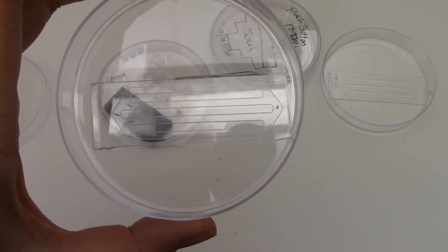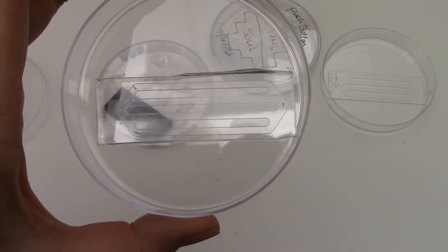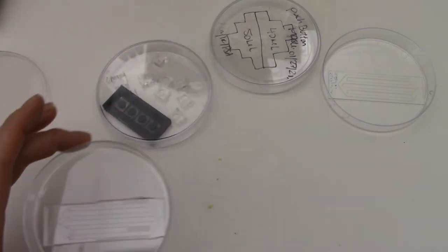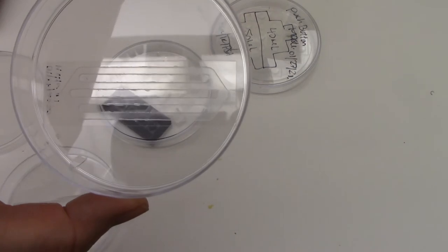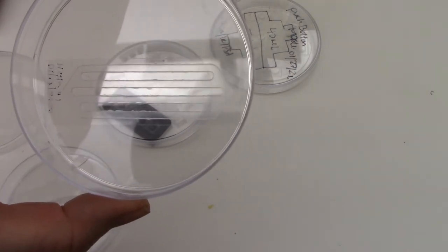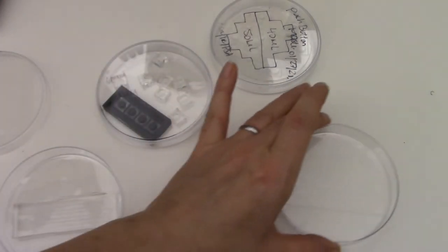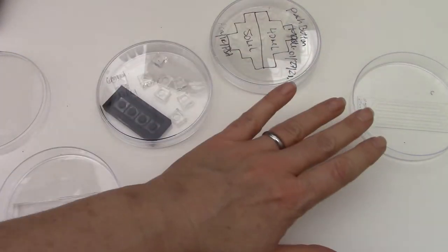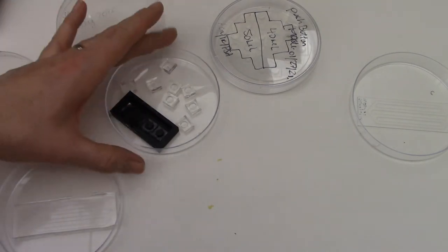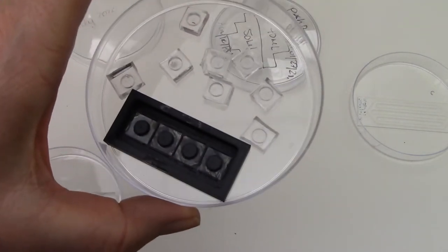This is an example of a final PDMS chip. This is an example of the laser cut mold that was used to make this chip. You can make molds out of a variety of different materials. As I mentioned, this one was laser cut. You can also 3D print your mold.